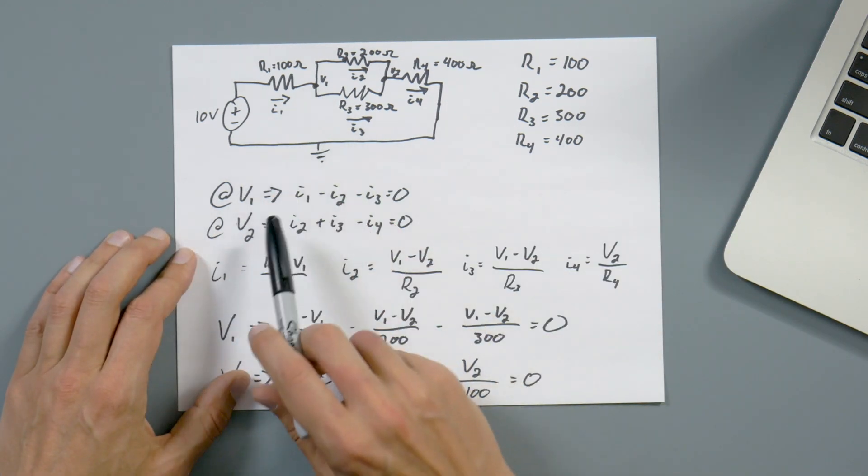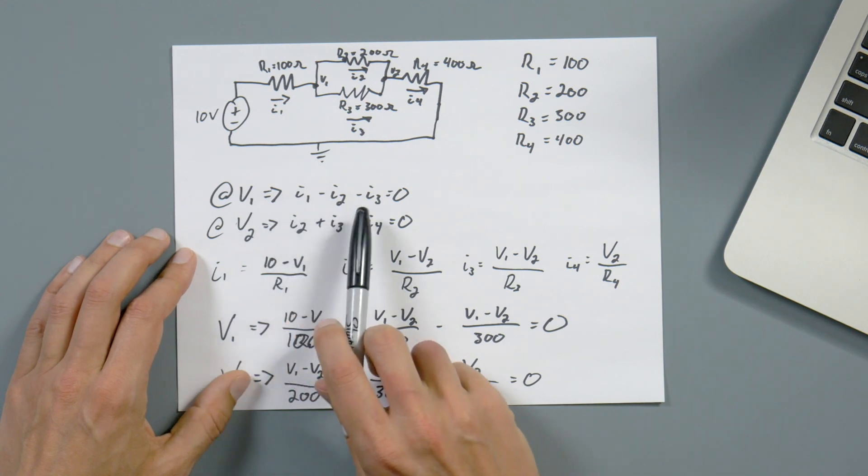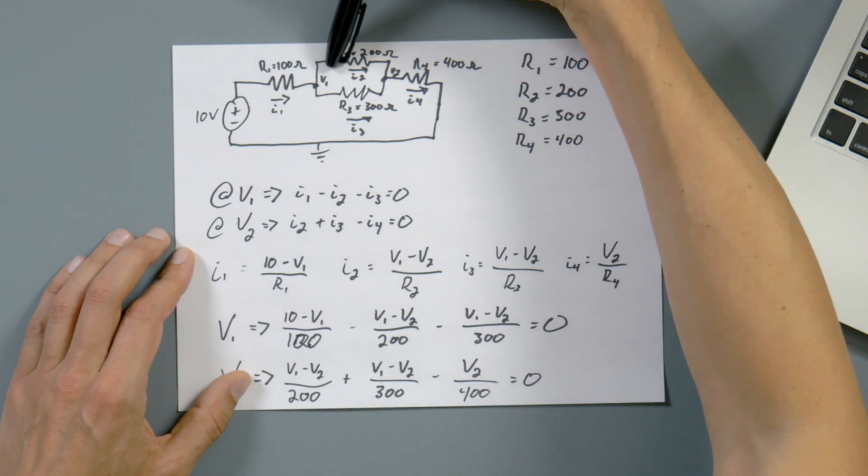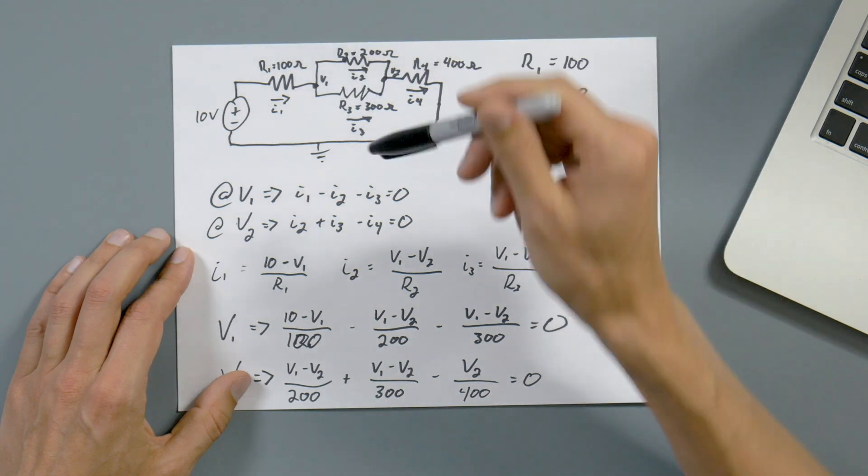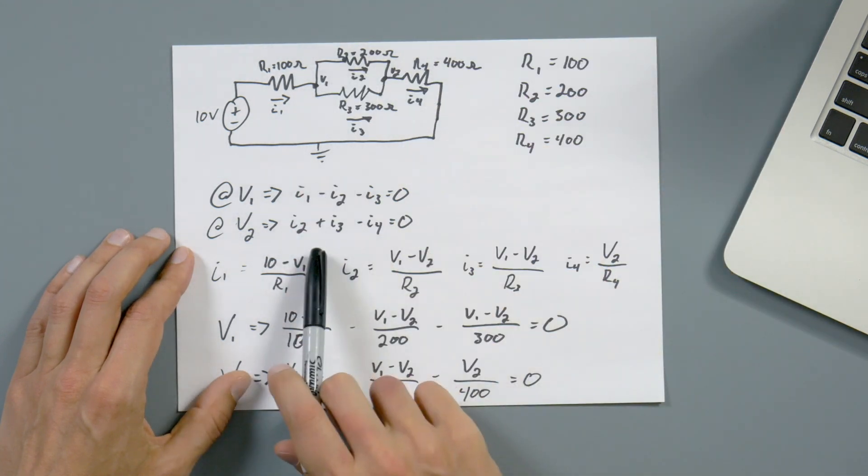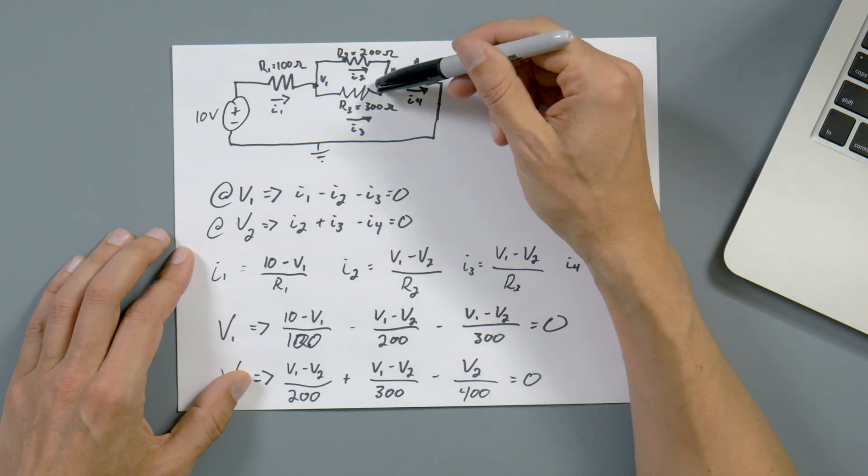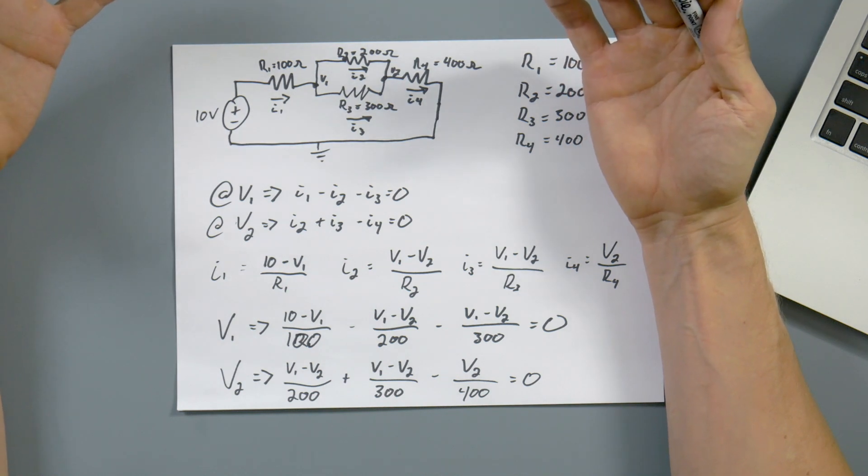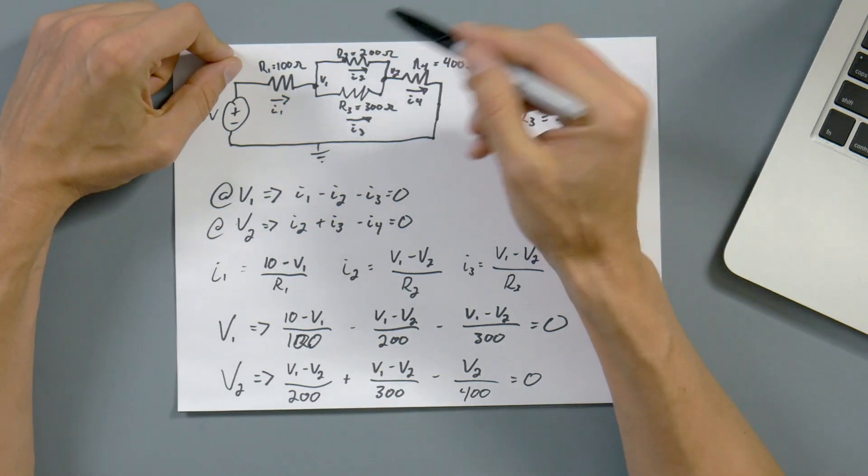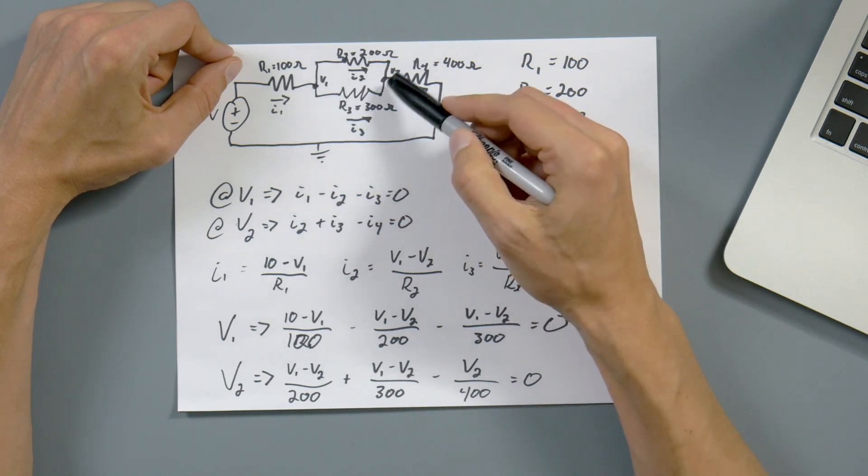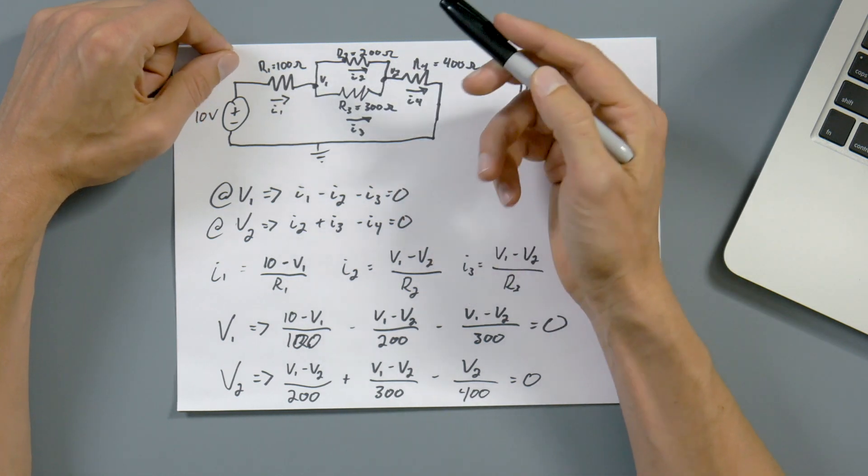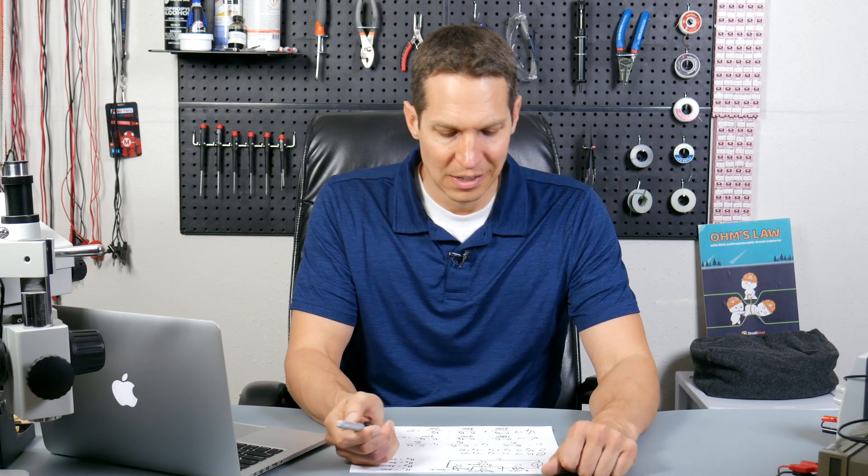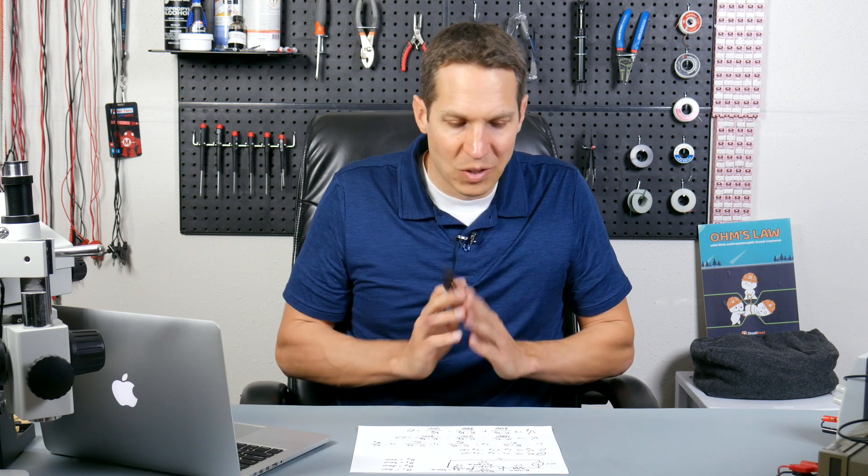And then going from there, I said using KCL at V1, I have I1 minus I2 minus I3 equals zero because I1 is going in, I2 is leaving, I3 is leaving. And then on V2, I have I2 plus I3 minus I4 equals zero. If I'm going too fast, that probably means you just need to spend a little bit more time with KCL. But all I'm doing here is identifying the currents in and out of those two nodes.